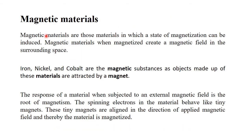Magnetic materials are those materials in which a state of magnetization can be induced. When magnetized, they create a magnetic field in the surrounding. You can classify all magnetic materials based on permeability strength. On the basis of this, magnetic materials can be divided into five categories.